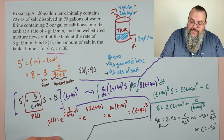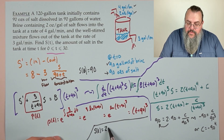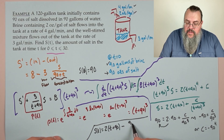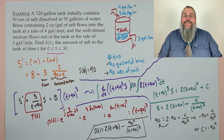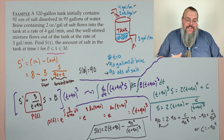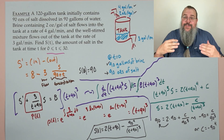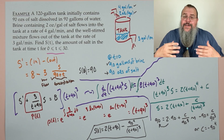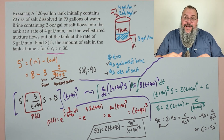The final answer: S(t) = 2(t+90) − 90⁴/(t+90)³, for t from 0 to 30. This captures the amount of salt in the tank at any given time. If we wanted the amount when the tank is full, plug in t = 30 — but that's a calculator question.